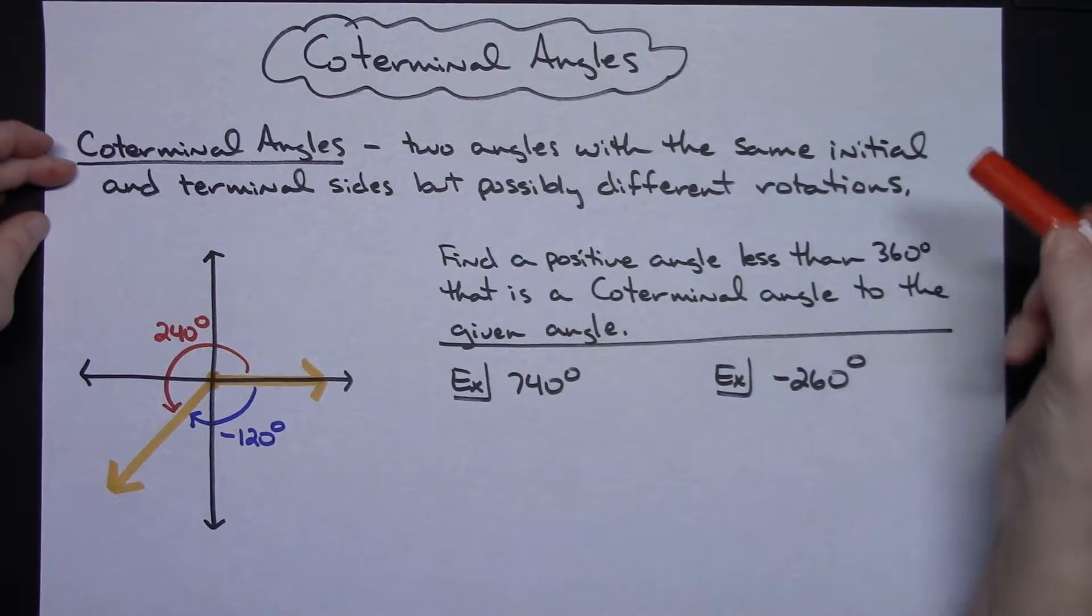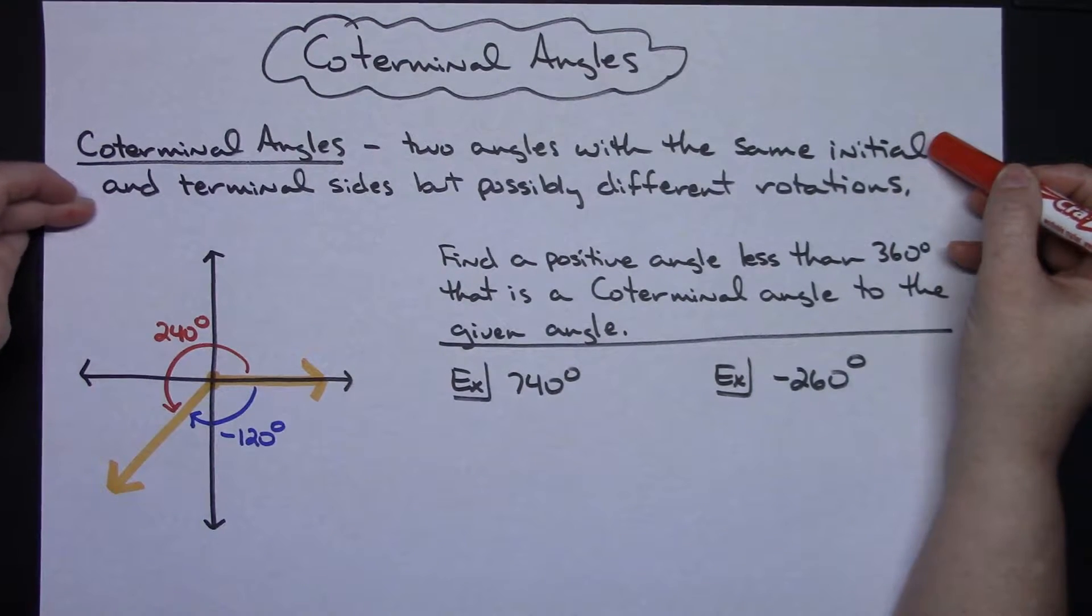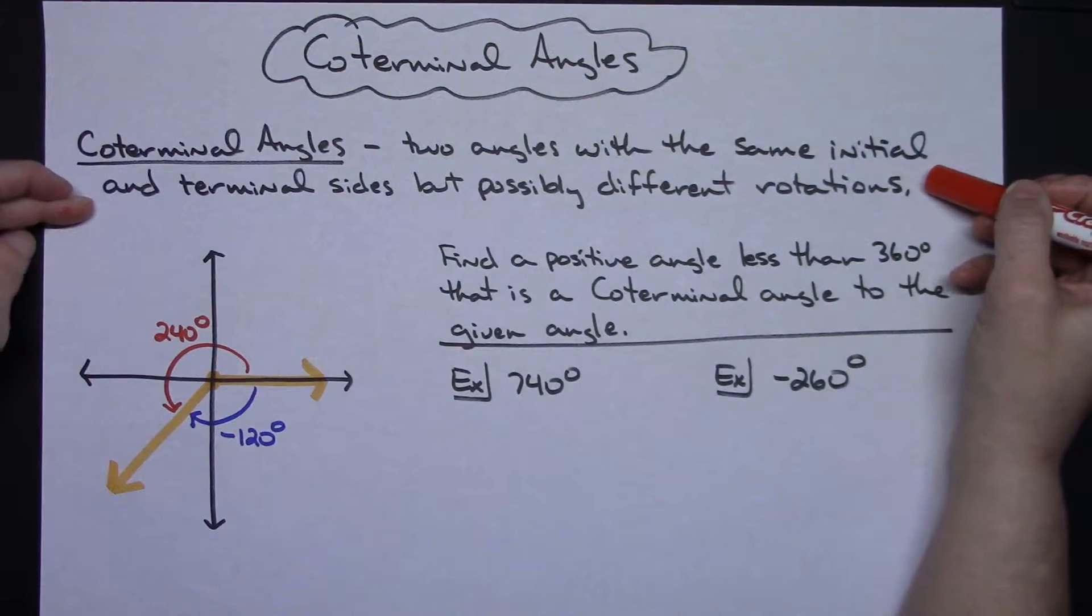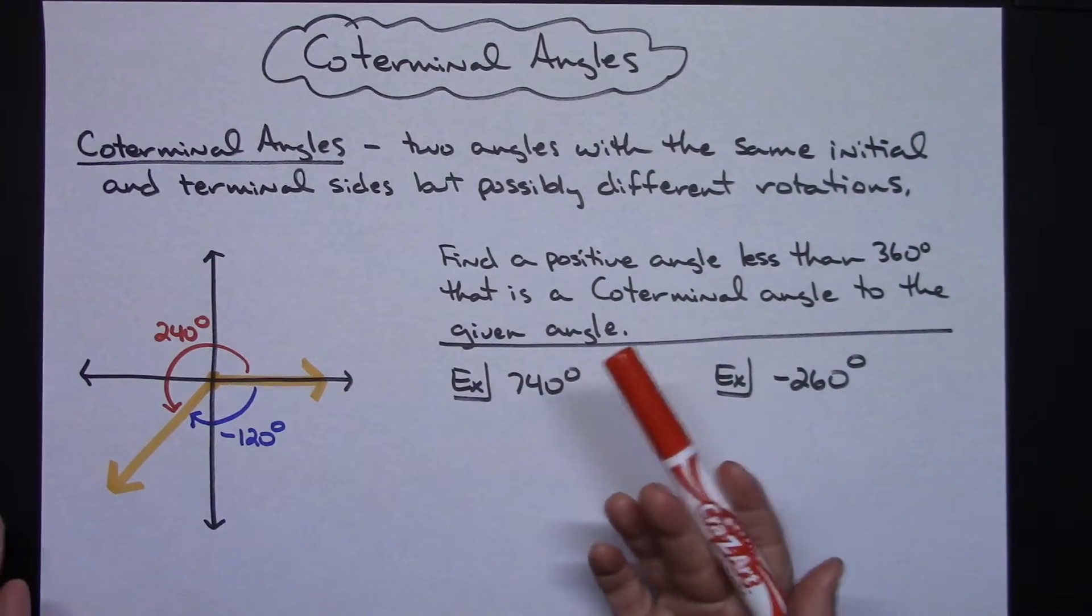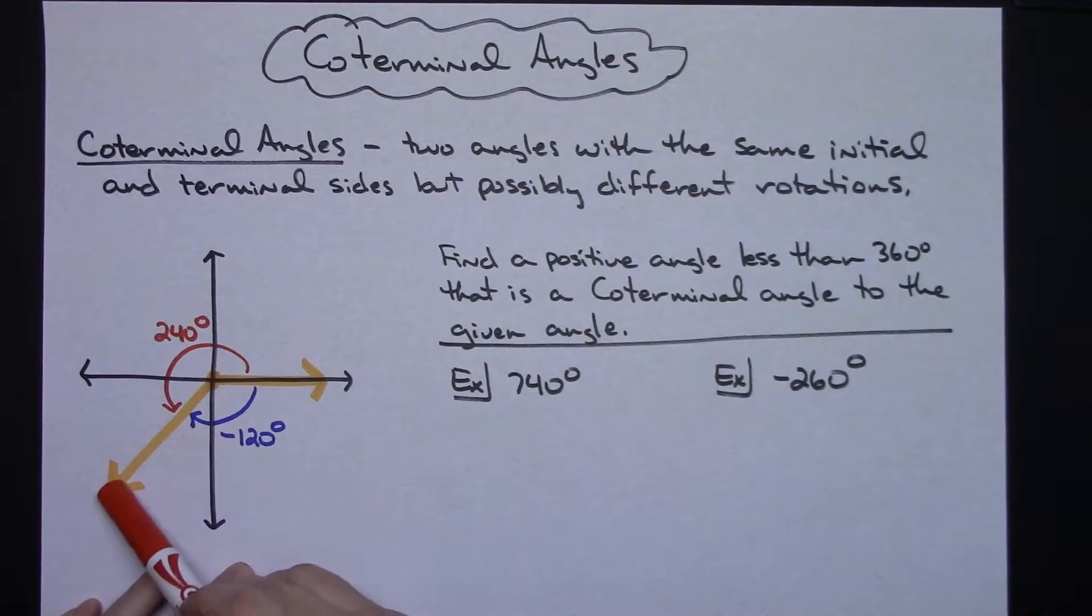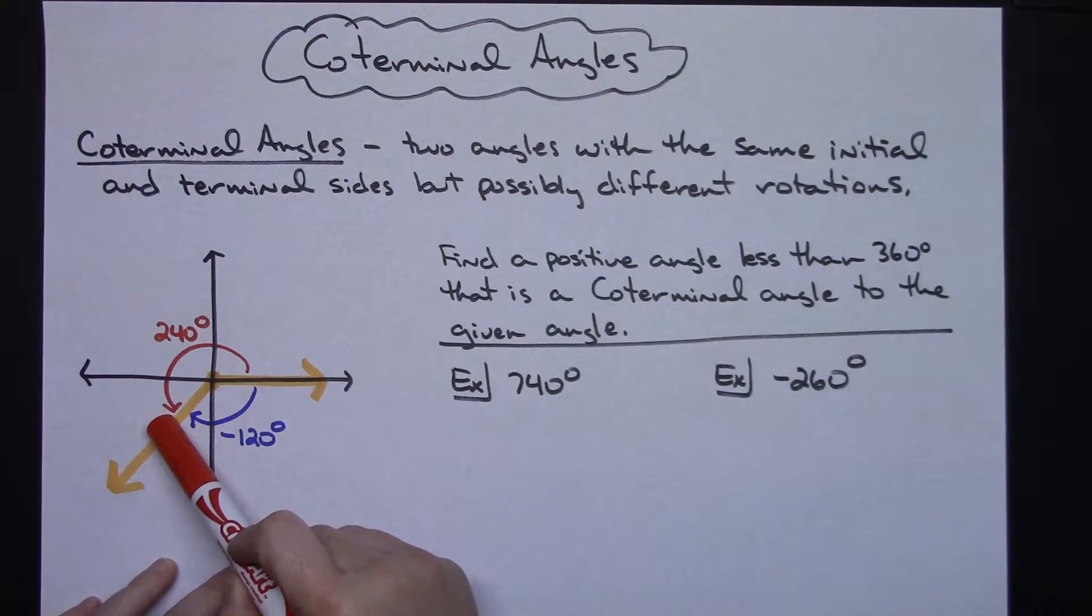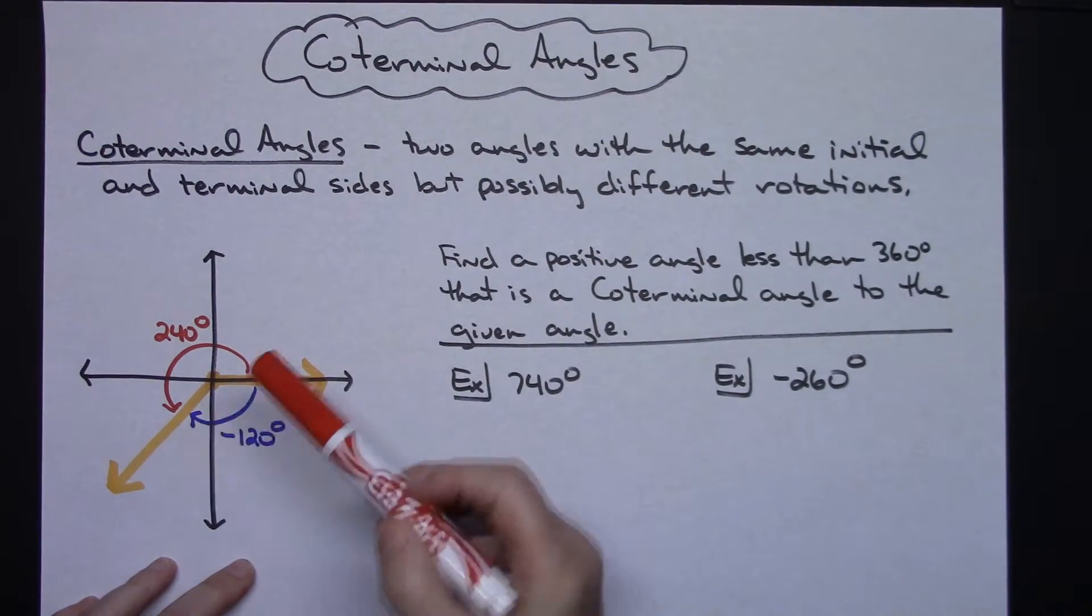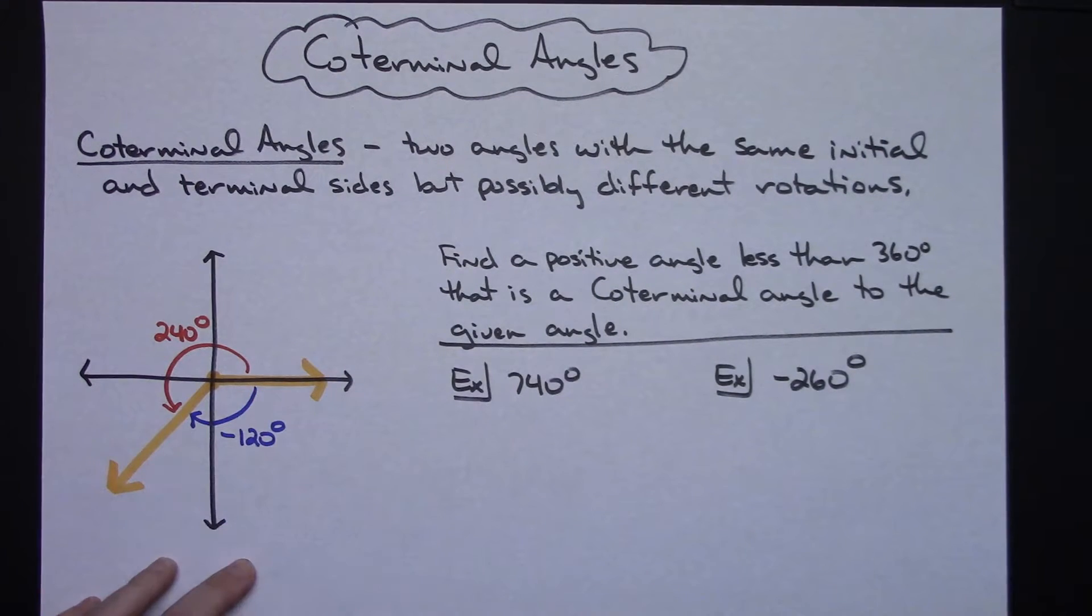Coterminal angles are two angles with the same initial and terminal sides but possibly different rotations. So over here I've drawn out one possible scenario of two coterminal angles. Let's suppose I have an angle drawn like such and from here around here would be 240 degrees. Well so then its coterminal angle would be a negative 120 degrees.